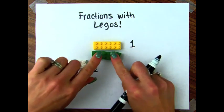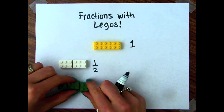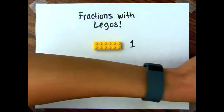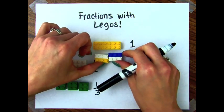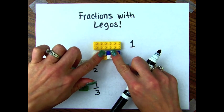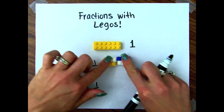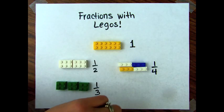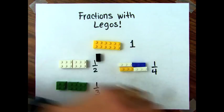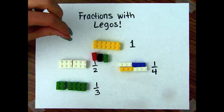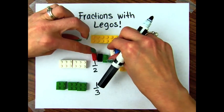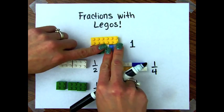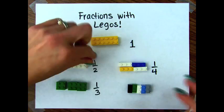I've got three of these, so these are going to represent thirds. Each one of those is a third. We also have these four that equal one whole unit, so these will be fourths. And then these tiny ones — there are six of them that equal one whole unit, so those are going to be sixths.